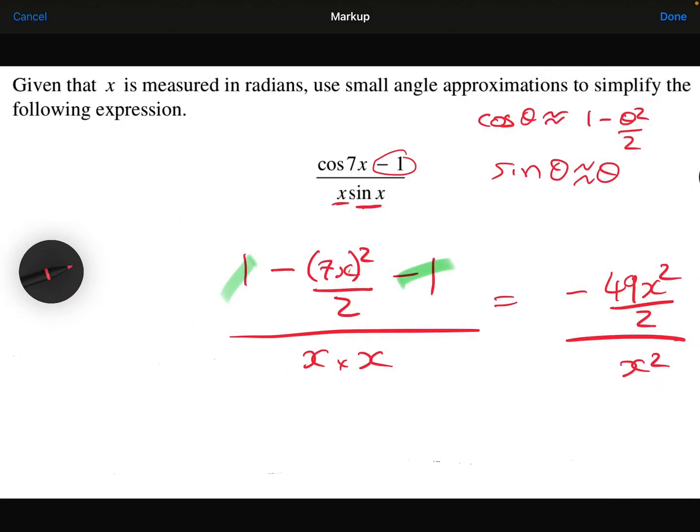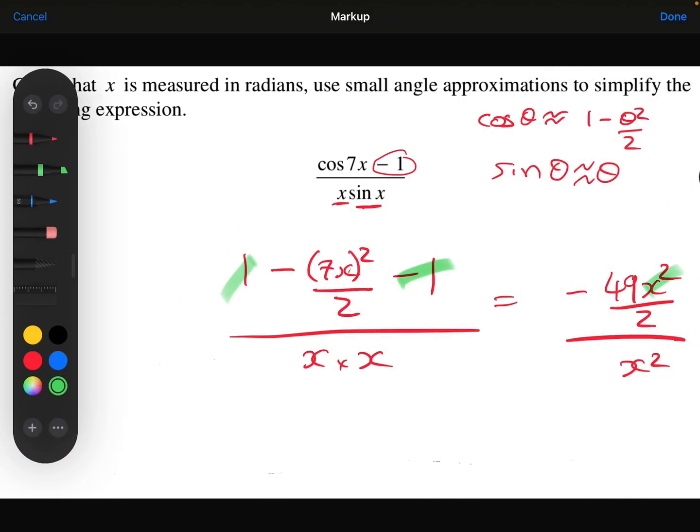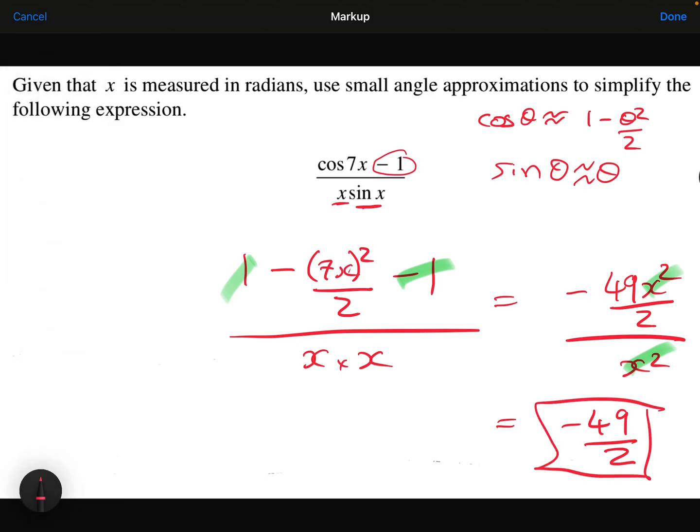And now we can see that the x squareds here and here will cancel out. And I'll just get left with minus 49 over 2. And there we go. That is the simplified expression of all of this.